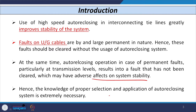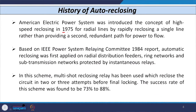Let us discuss the history of auto reclosing and the different types of auto reclosing systems. The first time, in 1975, the American electric system introduced this type of system for radial distribution networks. By adopting this reclosing feature for radial distribution networks, the continuity of supply could be improved.